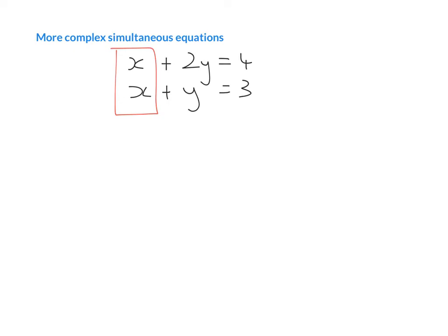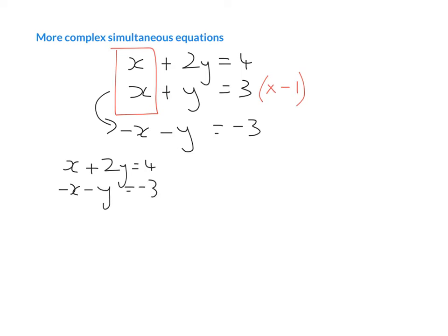I'm going to multiply the second line by minus one, so that gives me minus x minus y equals minus three. Rewriting the two lines: the first line is x plus 2y equals four, and the second is minus x minus y equals minus three. Now carrying out the elimination — the x and minus x cancel out. Then 2y minus y gives me y, and four minus three gives me one. So y equals one.